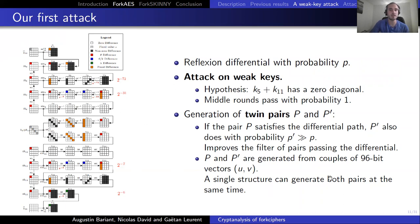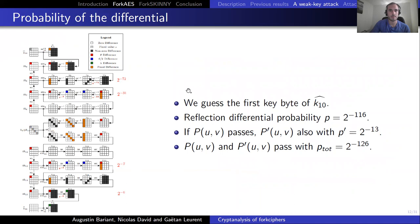P and P' are generated from couples of 96-bit vectors U and V, so a single structure can generate both pairs simultaneously. We first guess the first byte of K10 and with that guess, the probability of the full differential is 2 to the power minus 116. And if P passes the differential, then P' also, but with a much higher probability, 2 to the power minus 13. And this is because it passes all the first rounds with probability 1 if P passes it also.